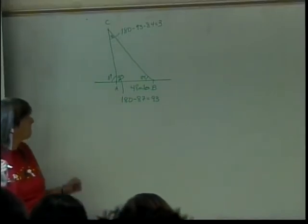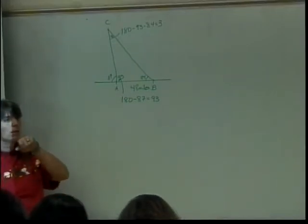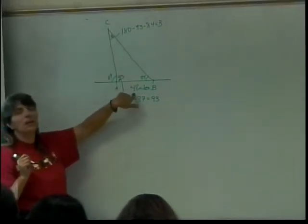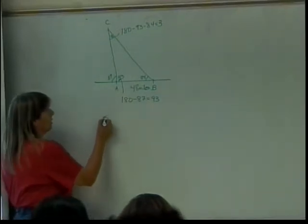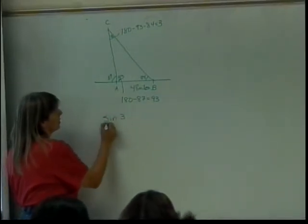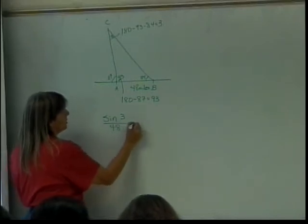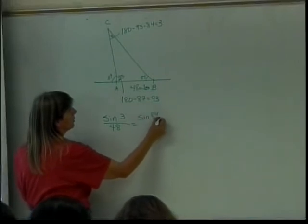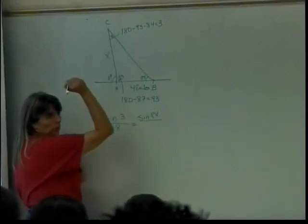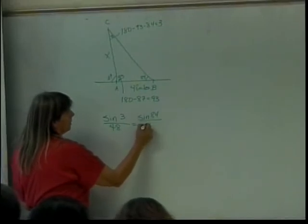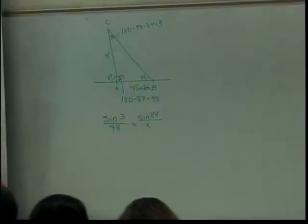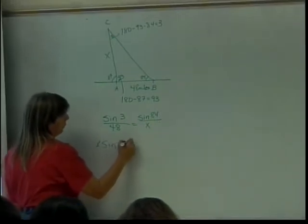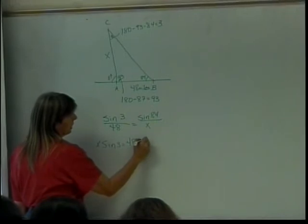Then you can use the sine of 3 over 48 — it's going to use the law of sines. I have an angle opposite a side that I know, so I can use the sine of the angle. The sine of 3 degrees over 48 is equal to the sine of 84 over x, because that's what we're looking for.